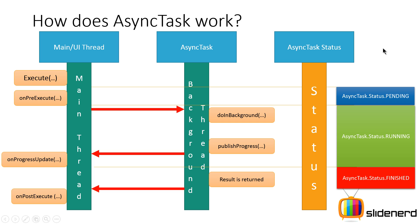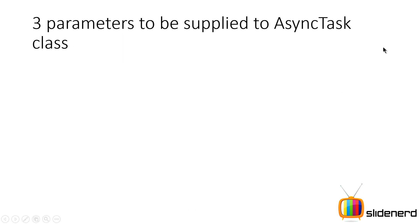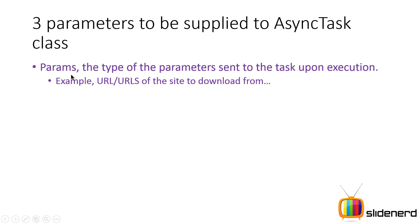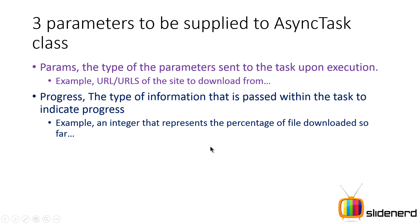Three parameters need to be provided to your AsyncTask. AsyncTask is based on generics in Java. The first parameter is Params — the type of parameter sent to the task for execution. For example, if you're downloading something from a site, Params could include the URL or multiple URLs from where the content needs to be downloaded.